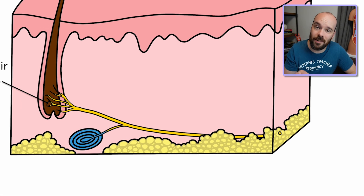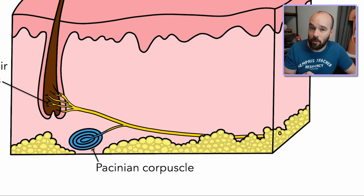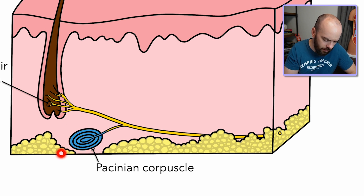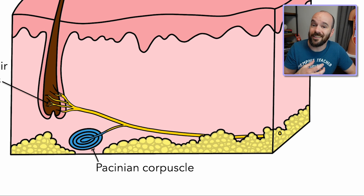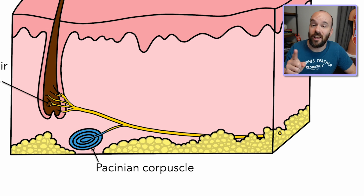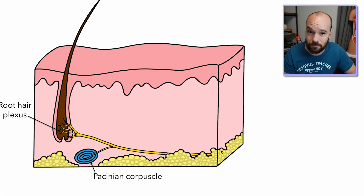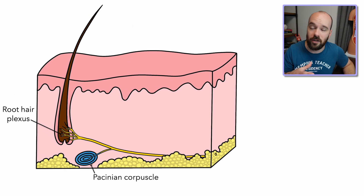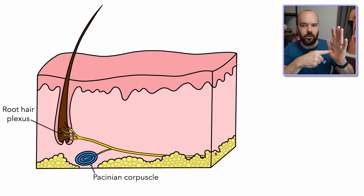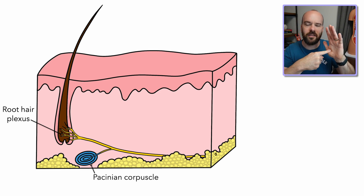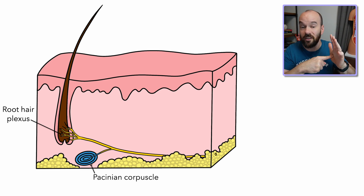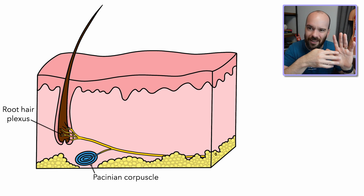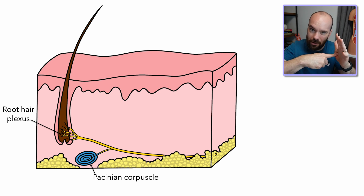Up next, we have a Pacinian corpuscle. Pacinian corpuscles are found pretty deep in the dermis — way down near the hypodermis on the diagram. They detect deep pressure, which makes it easy to remember: Pacinian and pressure both start with P. These also detect vibrations. If you imagine something pushing firmly on your skin, that's the Pacinian corpuscles picking up on that deep pressure — not light touch, but something pressing deeply.